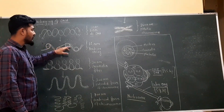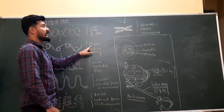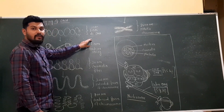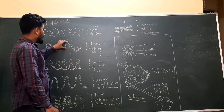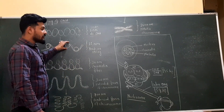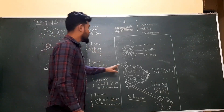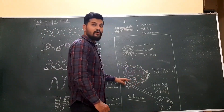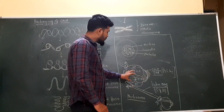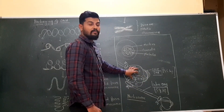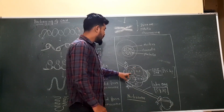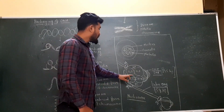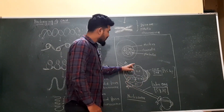These beads on string, also called as chromatin, are around 10 to 11 nanometer in their diameter. Each bead of the beads-on-string model is called as the nucleosome. Each nucleosome is made up of histone proteins and the DNA wrapped around them. These histone proteins are made up of four basic monomers: H2A, H2B, H3, and H4. Each of these monomers has two copies in the histone octamer, means in the nucleosome.